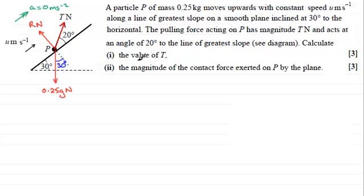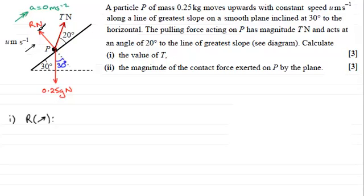To find T, we resolve forces up the plane, taking up the plane as positive and applying Newton's second law: force equals mass times acceleration. When looking at the resultant force up the plane, perpendicular forces have no effect, so the reaction R newtons doesn't enter this equation. The tension T is inclined at 20 degrees to the direction we're resolving, so we split it into two components.